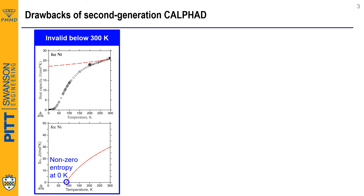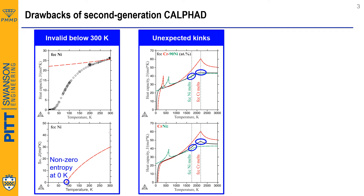First, it is invalid below 300K. The calculated heat capacity fails to fit experimental results from 0 to 300K, and non-zero entropy at 0K is also a big challenge. Second, it leads to unexpected kinks for heat capacity and other thermochemical quantities of pure elements. These kinks will further be inherited in solution phases and intermetallic compounds, which will cause some problems during modeling.